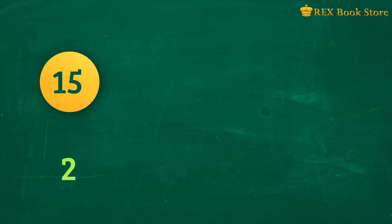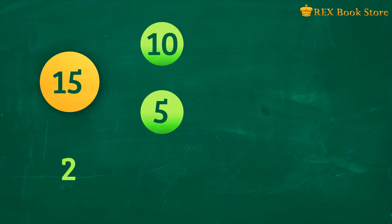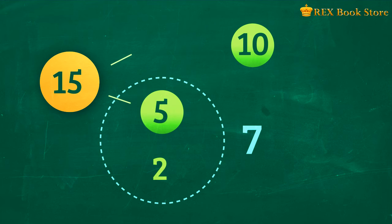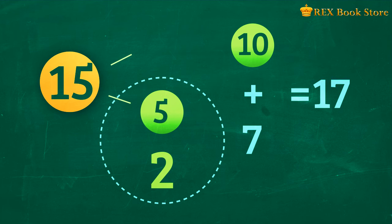As a number bond, we show 15 as two parts, 5 and 10. Regroup 5 and 10 to form 7. And we can show that 2 plus 15 is equal to 7 plus 10, which is equal to 17. So 2 plus 15 is equal to 17.